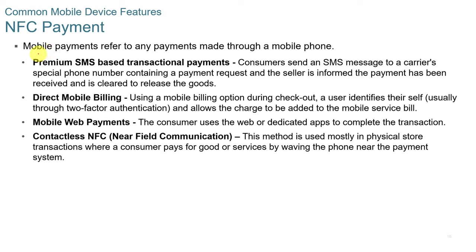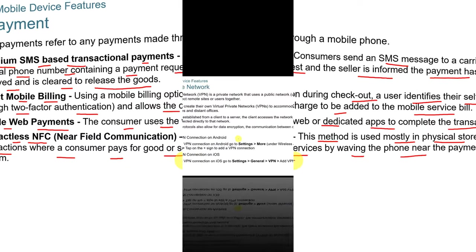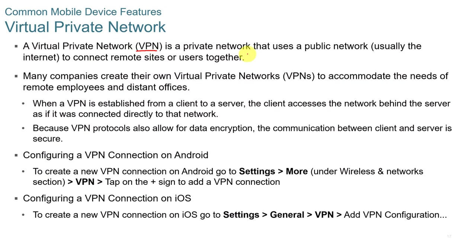There are several methods for mobile payments. Premium SMS-based transactional payments involve consumers sending an SMS message to a carrier's special phone number containing a payment request. Direct mobile billing lets a user identify themselves through two-factor authentication and charge the amount to their mobile service bill. Mobile web payments use the web or dedicated apps to complete transactions. NFC or contactless payments are used mostly in physical store transactions, where a consumer pays by waving their phone near the payment system.